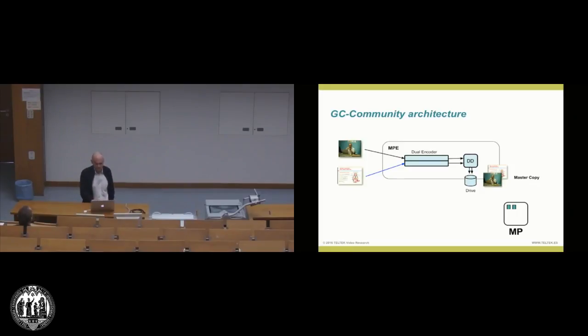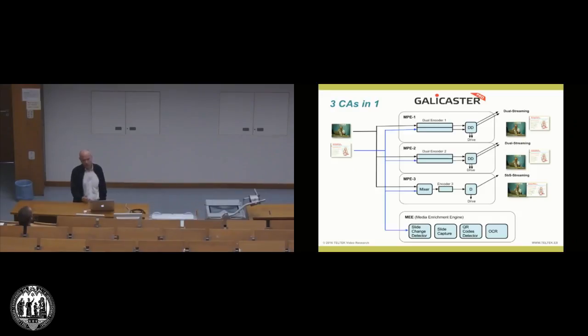If we look at the Galicaster Pro smart capture agent, it looks something like this. Basically, it's like three capture agents in one. You have media processing one, it's also a dual stream. This is close to a community capture agent, but it also has dual stream capabilities. You have another one, media processing engine, with dual encoding and dual streaming capabilities. And you have a third media processing engine, with a mixer. So you can blend together the two streams in a side-by-side or whatever configuration you want. Single stream encoding and then also a distribution engine for streaming or drive storage.